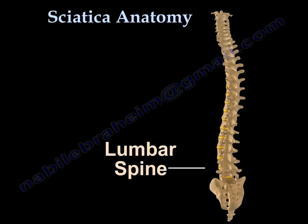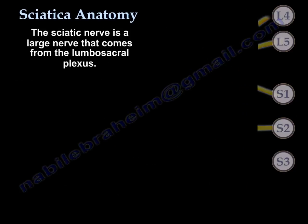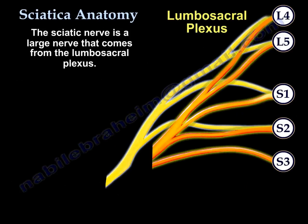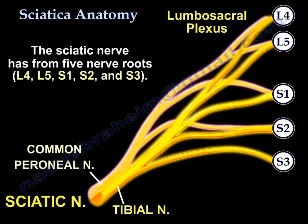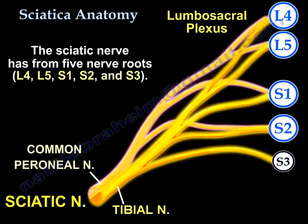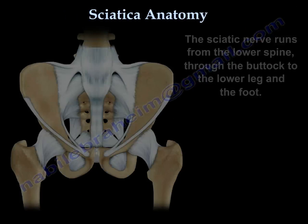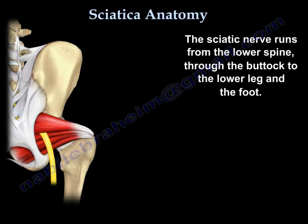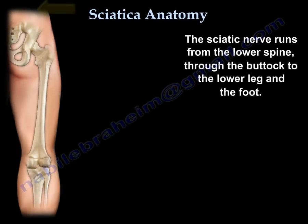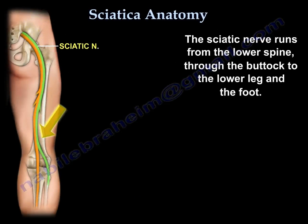Sciatica anatomy: the sciatic nerve is a large nerve that comes from the lumbosacral plexus. It has five nerve roots from L4, L5, S1, S2, and S3. The nerve runs from the lower spine through the buttock, down the leg and the foot.